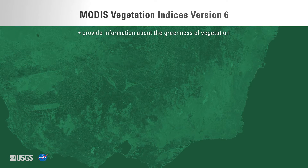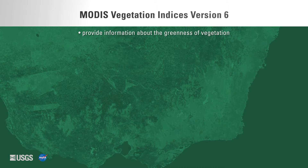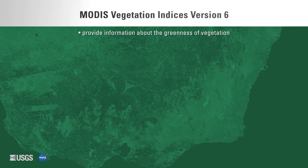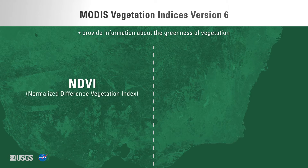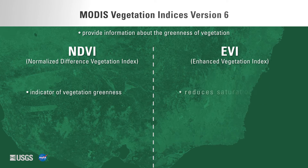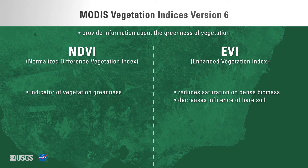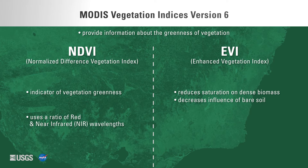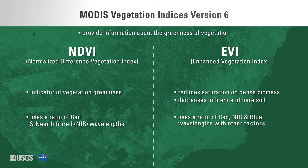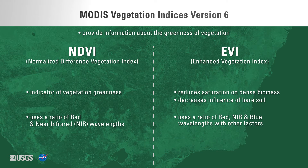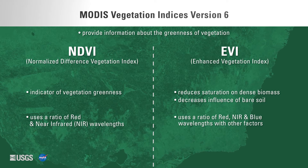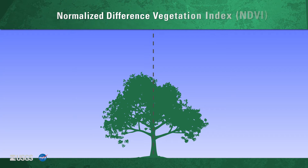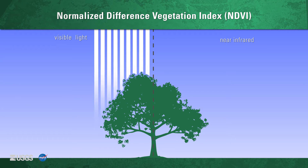The MODIS vegetation indices version 6 products provide consistent information about the greenness of vegetation on the earth's land surface. This data product family provides two types of vegetation indices: the Normalized Difference Vegetation Index (NDVI) and the Enhanced Vegetation Index (EVI). NDVI is calculated using a ratio of the red and near-infrared wavelengths, whereas EVI is calculated using a ratio of the red, near-infrared, and blue wavelengths along with other factors.